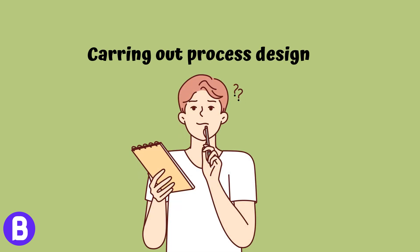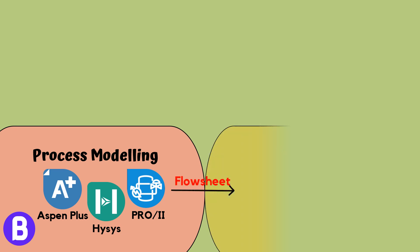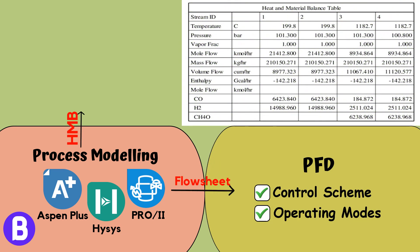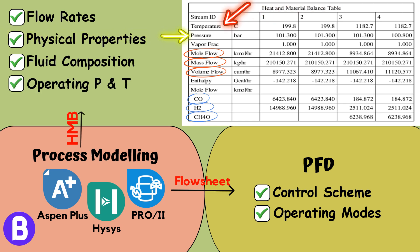So how is the process design carried out within a project? In the beginning, the process engineer creates the process flow diagram (PFD) and heat and material balance summary. These shall determine the expected flow rate and physical properties of the fluid, fluid composition, operating pressure and temperature, and plant control.